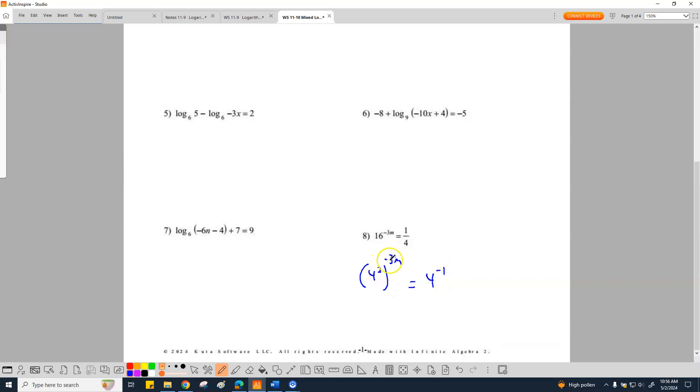The rule of exponents is, when you have exponents on top of exponents, you multiply. So I end up with 4 to the negative 6m, because 2 times negative 3 equals 4 to the negative 1.